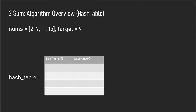Today I'll be going over Two Sum using the hash table method. In Two Sum, you're given an array and you're supposed to find the indices of two unique elements that add up to a given target number. You could do this the brute force way, which would be to check every single possible combination of numbers and see which two add up to the target number. This is very inefficient.